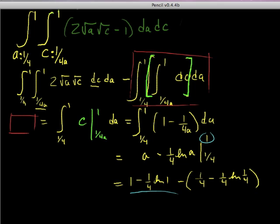Natural log of one is just zero, so let's get rid of that. We have one minus a quarter which is three quarters, and we still have this negative negative quarter ln of a quarter, so that's plus 1/4 natural log of a quarter.